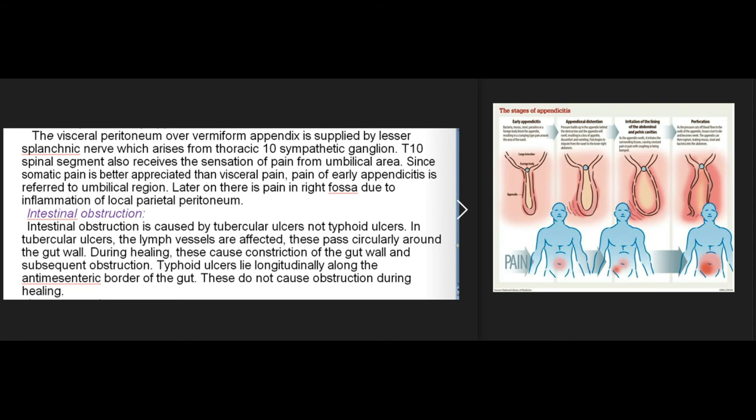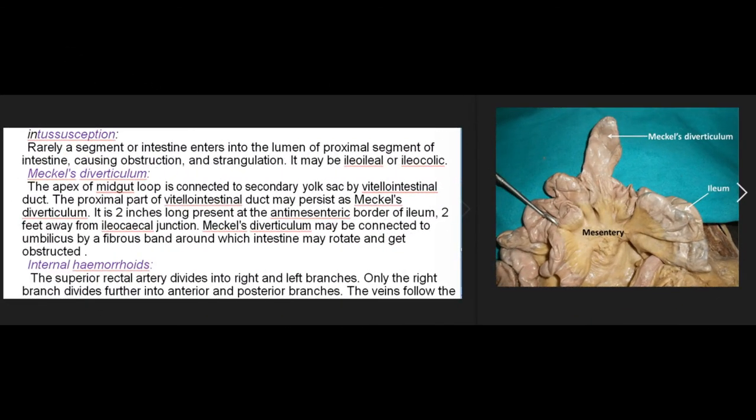Intestinal obstruction: caused by tubercular ulcers — in these the lymph vessels, which pass circularly around the gut wall, are affected; during healing they cause constriction of the gut wall and subsequent obstruction. Typhoid ulcers lie longitudinally along the antimesenteric border of the gut and do not cause obstruction during healing. Intussusception: rarely a segment of intestine enters into the lumen of a proximal segment, causing obstruction and strangulation; it may be ileocaecal or iliocolic.